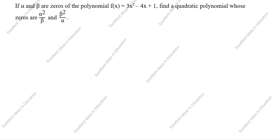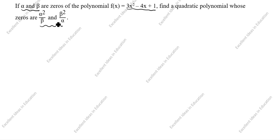Hi friends, welcome to my channel Excellent Ideas in Education. Today we are going to solve this quadratic polynomial problem. This is a board exam problem. If alpha and beta are zeros of the polynomial f(x) = 3x² - 4x + 1, find a quadratic polynomial whose zeros are alpha²/beta and beta²/alpha. We need to find this new quadratic polynomial.